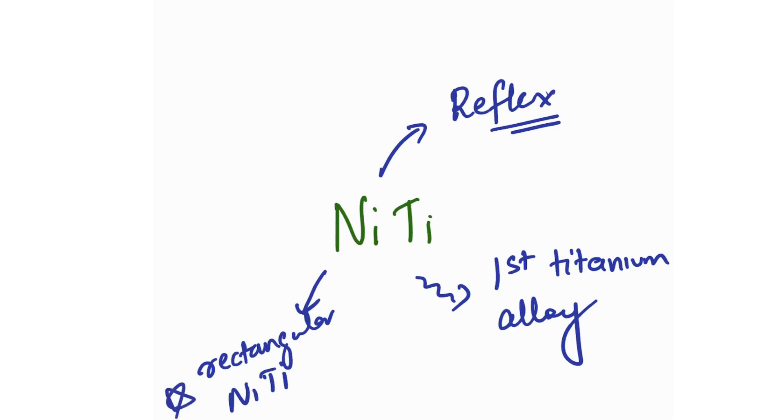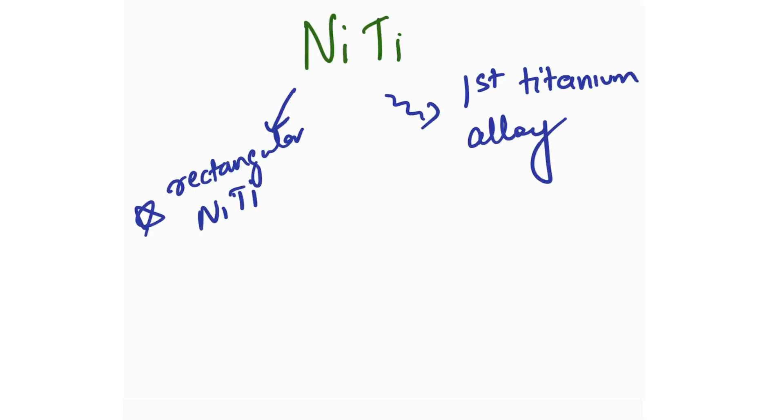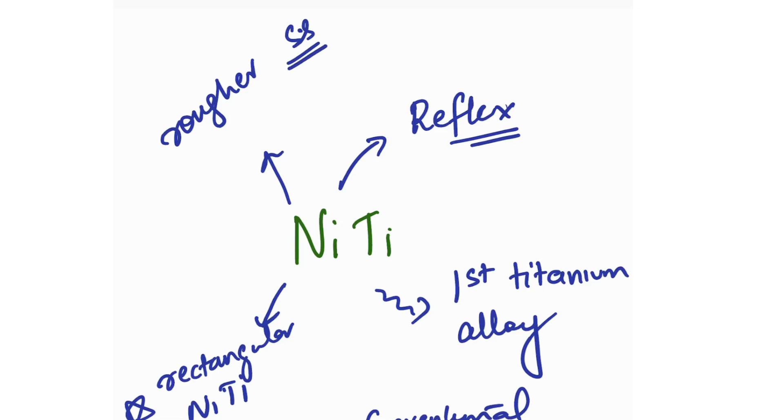There are three types of nitinol used in orthodontic practice. First is the conventional type, second is the pseudo-plastic, and third is the thermoplastic. The surface of nitinol is rougher than stainless steel and beta titanium. These are important things you should know about nitinol.